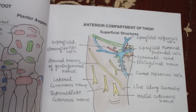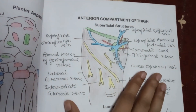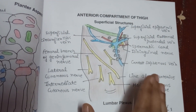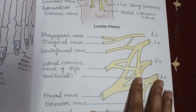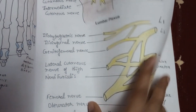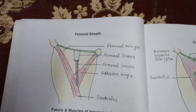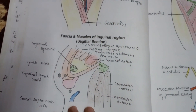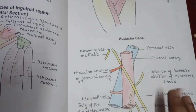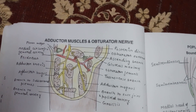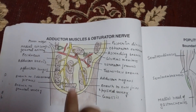This is the anterior compartment of thigh — a very important diagram. You should know each and every artery, nerve, and muscle. This is the lumbar plexus. After lumbar plexus, here comes the femoral sheath, fascia and muscles of the inguinal region, the femoral triangle, and after that the adductor canal. This is the adductor muscles and your obturator nerve.